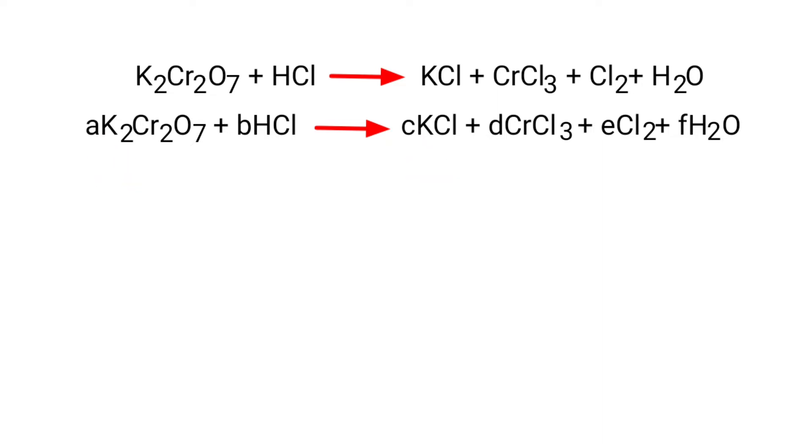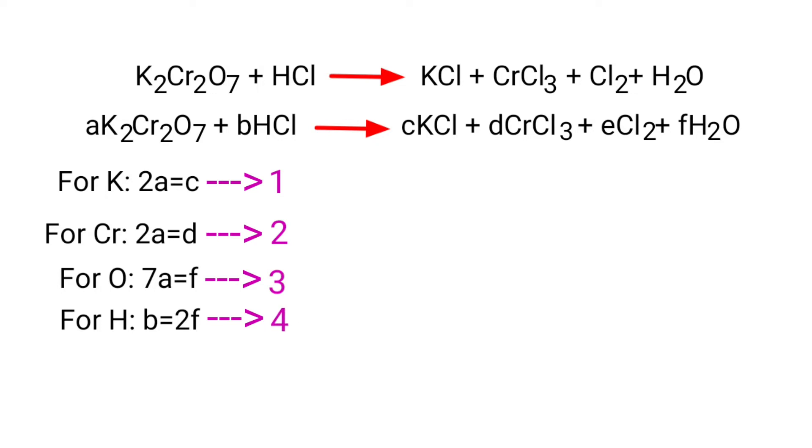For potassium, 2a equals c. For chromium, 2a equals d. For oxygen, 7a equals f. For hydrogen, b equals 2f. For chlorine, b equals c plus 3d plus 2e.